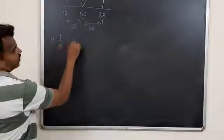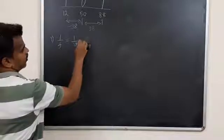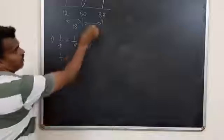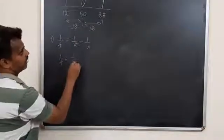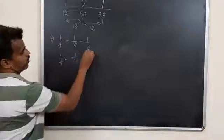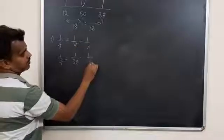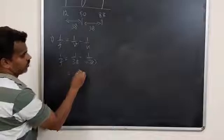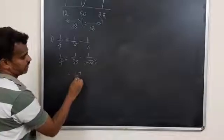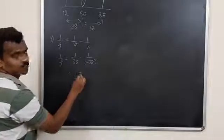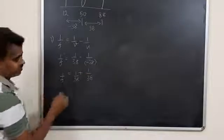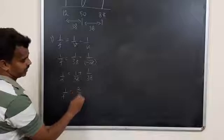1 by F equals 1 by V minus 1 by U. What is the V value we have? 1 by 38. What is the U value? Minus 38. So minus minus plus. 1 by 38 minus minus plus 1 by 38. Therefore, 1 by F is equal to 2 by 38.